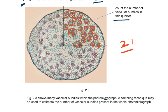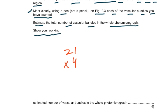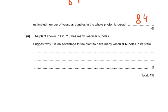Showing the counting on the photomicrograph gets one mark. Then the correct number of vascular bundles counted gets a mark. Then show the number of vascular bundles multiplied by four — because this is one quarter of the whole stem — so 21 × 4 = 84. The estimated total number is 84 vascular bundles in the entire photomicrograph. That gives you four marks for this part.